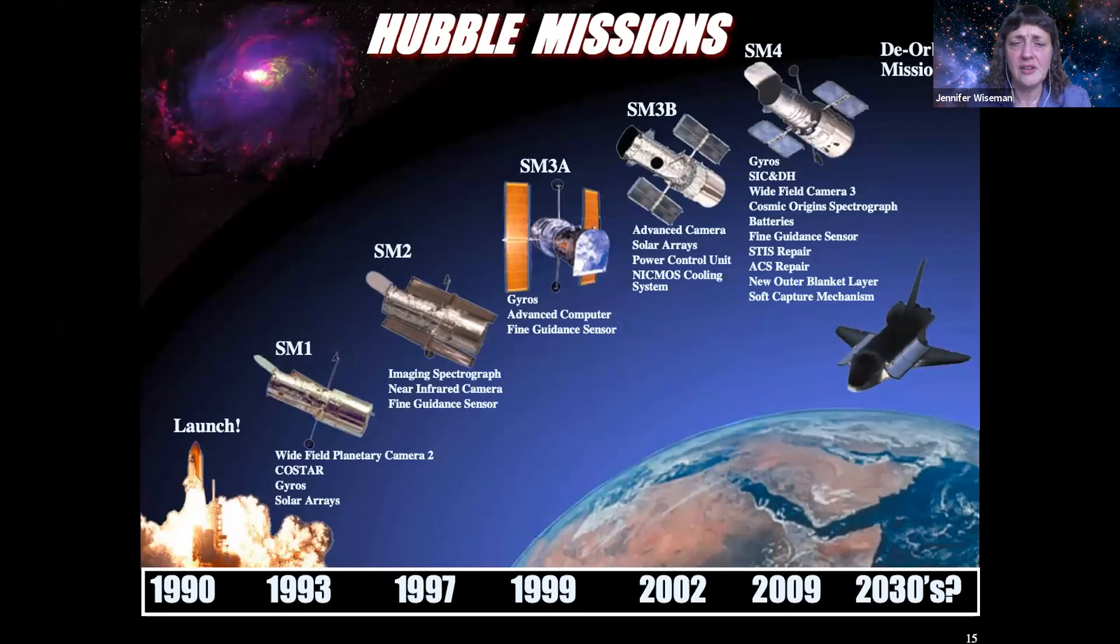Astronauts have returned on these repeated servicing missions throughout the years, each time either replacing or repairing equipment, some of the enabling equipment, solar arrays, gyroscopes, batteries, and sometimes replacing science instruments with new and improved science instruments, new cameras, new spectrographs, things of that nature. The last and final space shuttle servicing mission that we did was in 2009. And that mission was extremely successful.